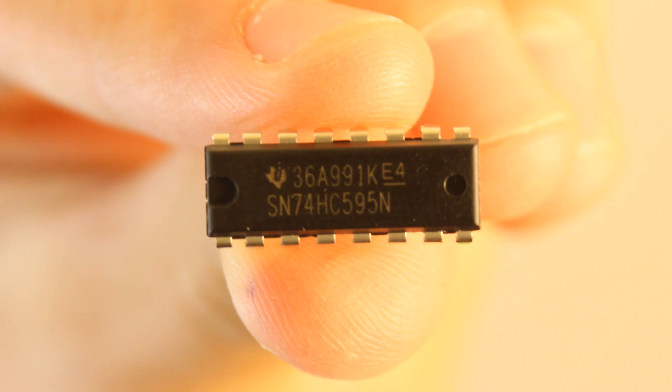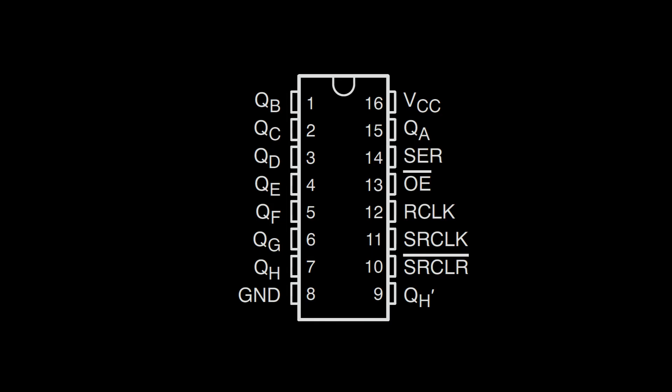I will use the 74HC-595 as an example, but it is representative of almost all shift registers on the market. The 74HC-595 has 16 pins, eight output pins, five control pins, two power pins, and one extension pin.